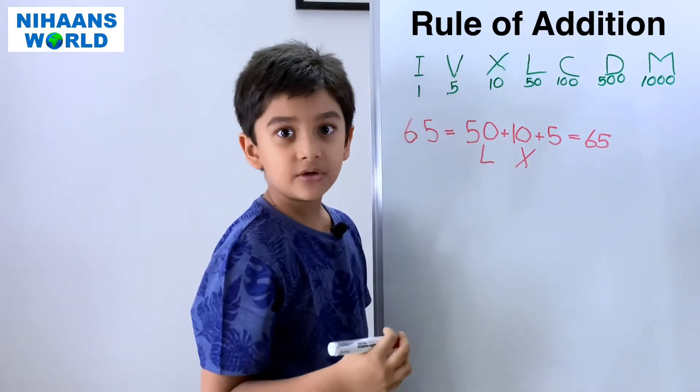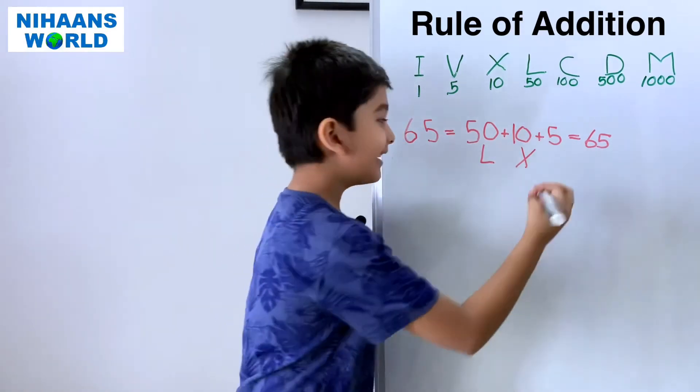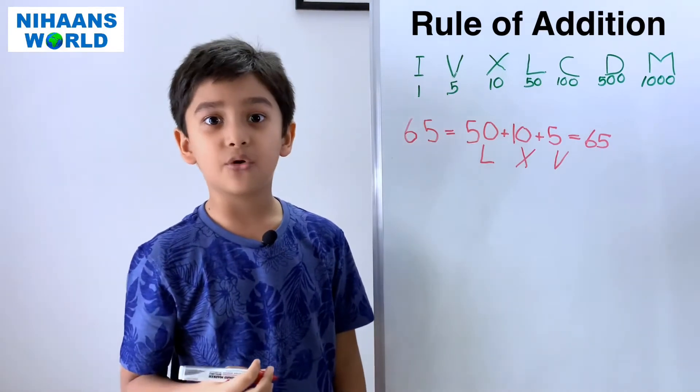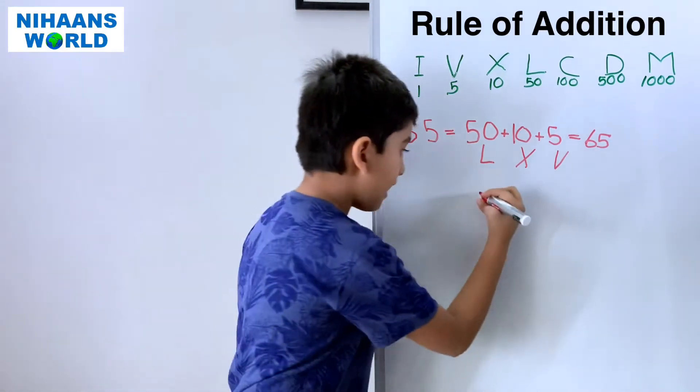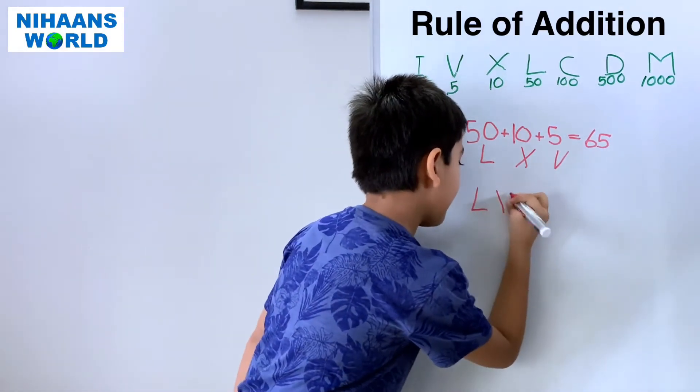So, we write sixty-five in Roman numerals as L X V.